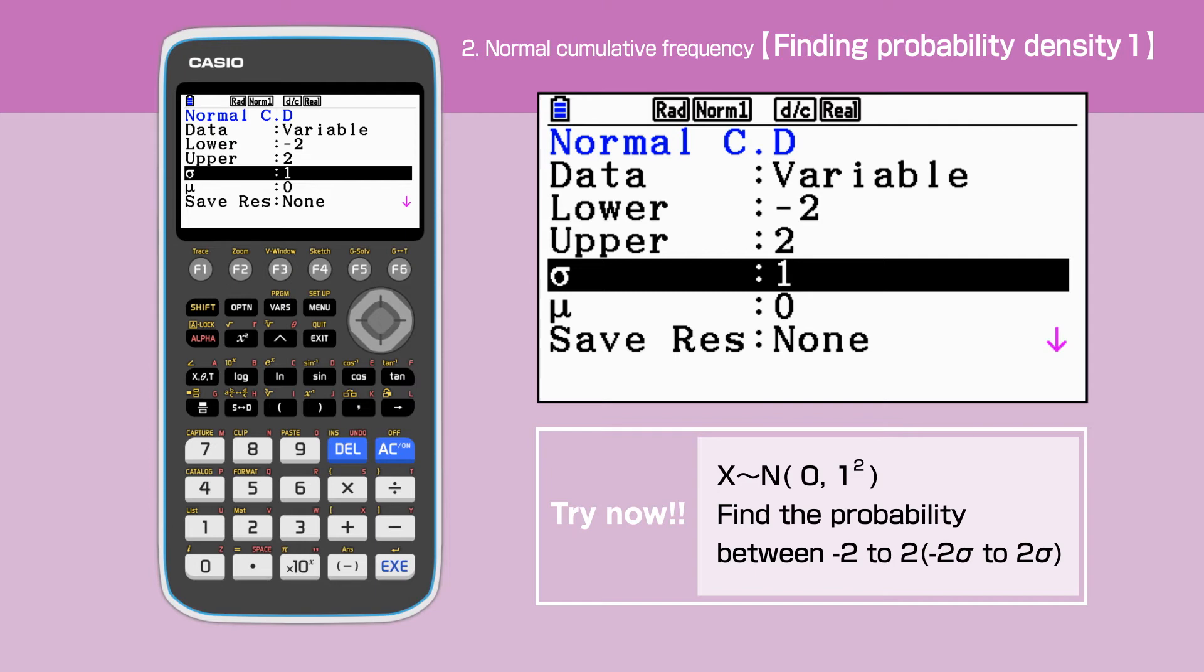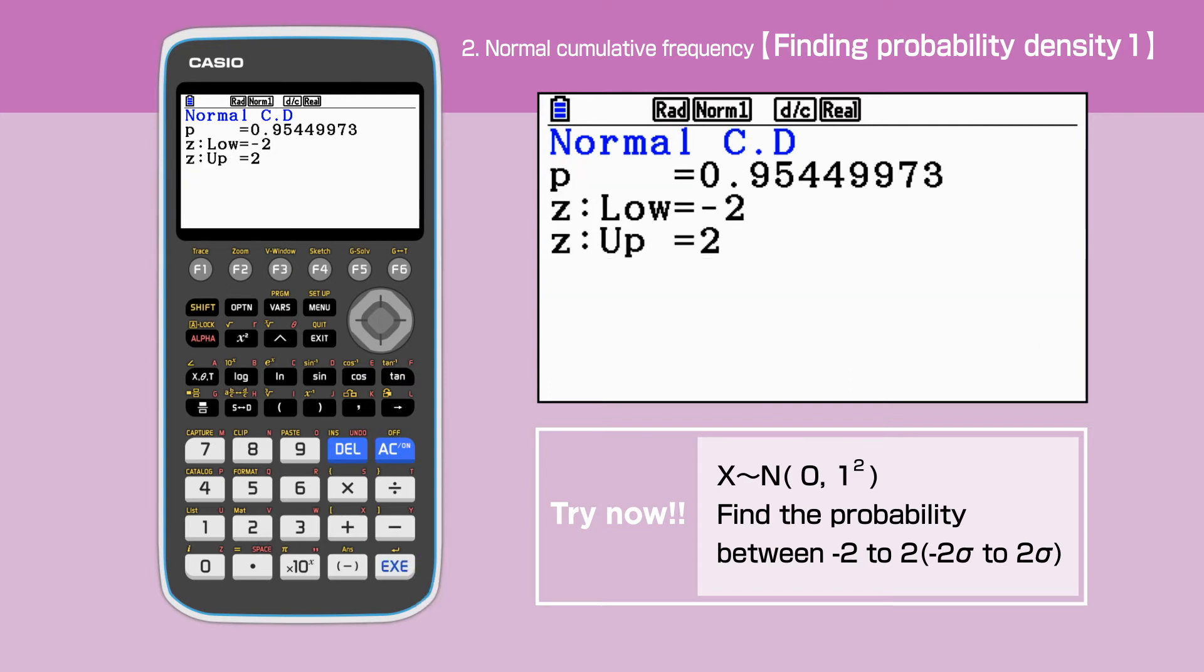It is possible to work out probability without drawing the graph. In this case, press Execute. We have 0.954 for the answer.